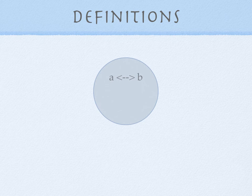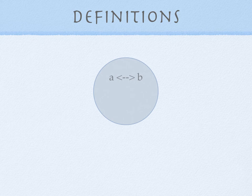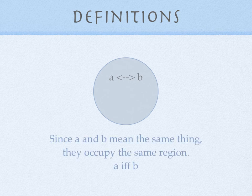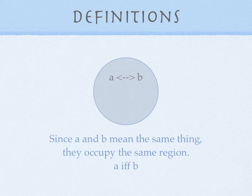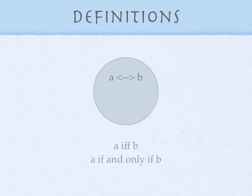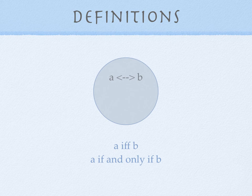And then we use a funny notation, A, and that arrow has an arrow on both ends instead of just heading in one direction. And we read this as A, and we use a funny notation, I-F-F-B, which means A if and only if B.